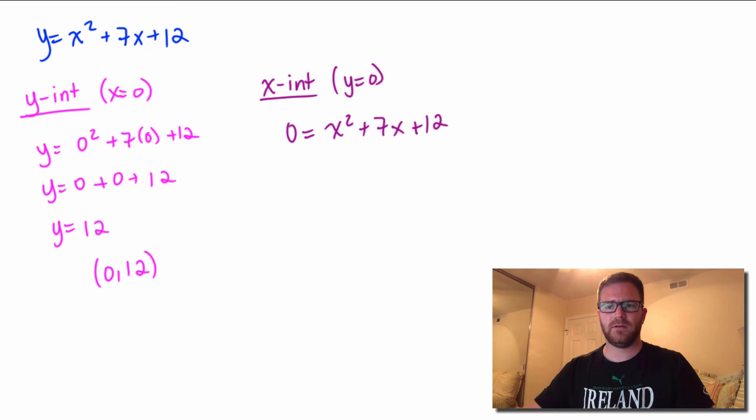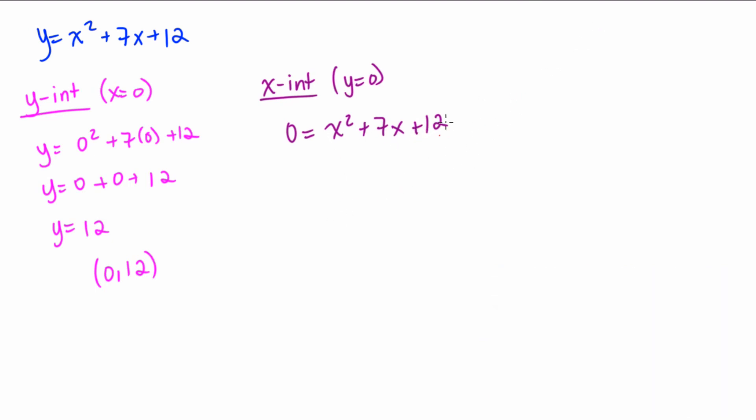So we have a quadratic here, which means we have a few ways that we could try to solve this. Some of the most common are factoring and the quadratic formula. This one actually looks like it's factorable, so let's try that first. So remember to factor, what we're trying to do is look for two numbers that multiply to be 12. So they multiply to be 12 and add to be 7.